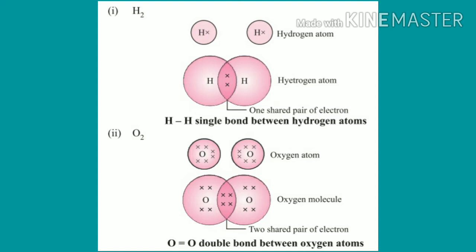Next, let's look at oxygen. The oxygen molecule is O2 — two oxygen atoms. Atomic number of oxygen is 8: K-shell fills with 2, so 6 electrons remain in the outermost shell. To complete the octet (reach 8), each oxygen atom needs 2 more electrons, so they share 2 pairs of electrons with each other. This forms a double bond in the O2 molecule.